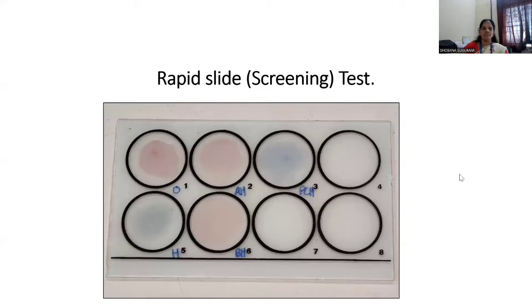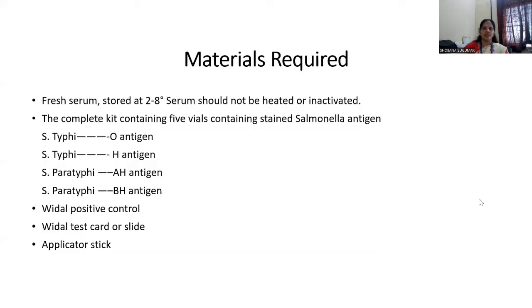Today, you will be performing the experiment — a rapid slide screening test. This is the slide. Materials required for this experiment: the first one is fresh serum sample stored at 2 to 8 degrees Celsius. The serum should not be heated or inactivated; it should be a fresh serum sample. And the complete Widal kit containing 5 vials with stained Salmonella antigens: Salmonella Typhi O antigen, Salmonella Typhi H antigen, Salmonella Paratyphi AH antigen, Salmonella Paratyphi BH antigen, a Widal positive control, a Widal test card or slide, and wooden applicator sticks.